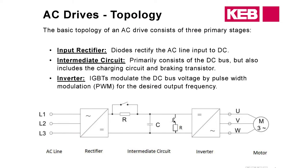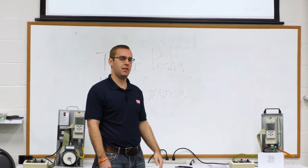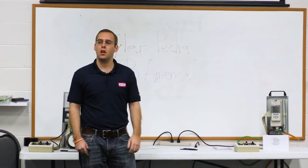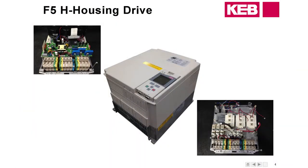Every drive is going to have three main parts. You're going to have your input rectifier, which takes your AC voltage and turns it into DC voltage. You'll have your intermediate circuit, which contains a DC bus, a braking transistor, and a charging circuit. Then you have the actual inverter output containing the IGBTs, which take that DC bus voltage, pulse on and off very quickly, and simulate an AC sine wave out to the motor. Throughout the presentation we'll feature our H housing drive. The internal workings are very similar across housing sizes — what you have in front of you is a G housing, so everything will look very similar but laid out a little differently internally.